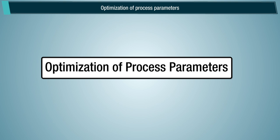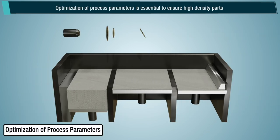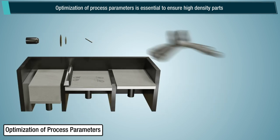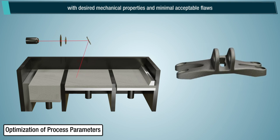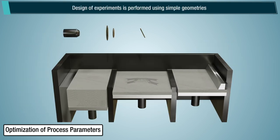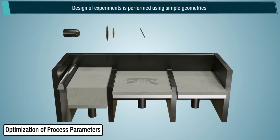Optimization of process parameters. Optimization of process parameters is essential to ensure high-density parts, with desired mechanical properties and minimal acceptable flaws. Design of experiments is performed using simple geometries.